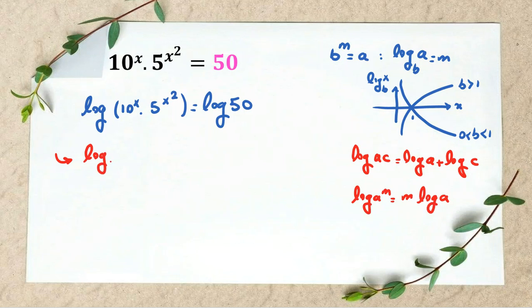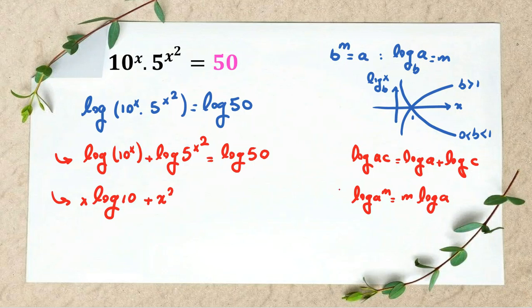So here, first I say log 10 to the x plus log 5 to the x squared equals log 50. And then it will be x log 10 plus x squared—I apply now this part, x squared—I take the power in front of log, log 5 equals log 50.